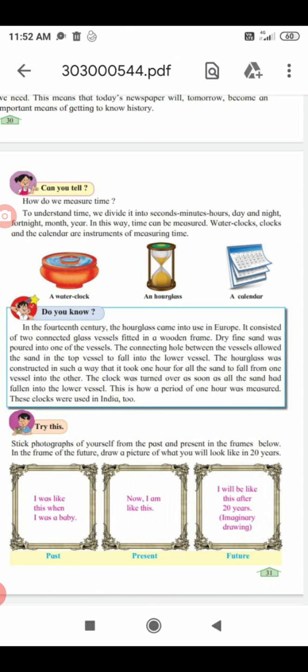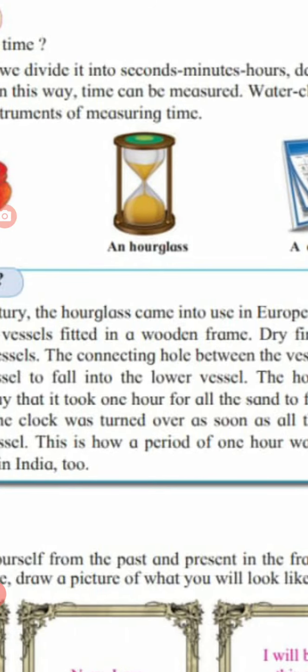The clock was turned over as soon as all the sand had fallen into the lower vessel. This is how a period of one hour was measured. These clocks were used in India too. It takes one hour for all the sand to fall from the upper part to the lower vessel. Once the full sand falls into the lower part, it is turned upwards again and again the sand starts falling, calculating another hour.